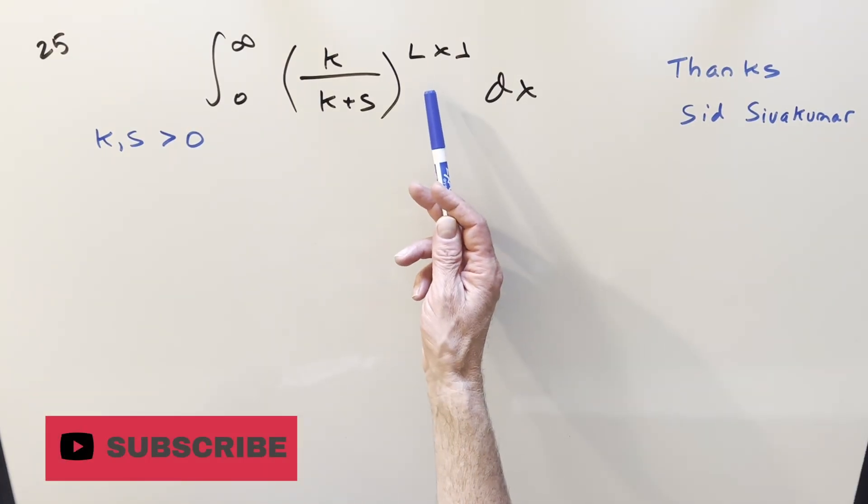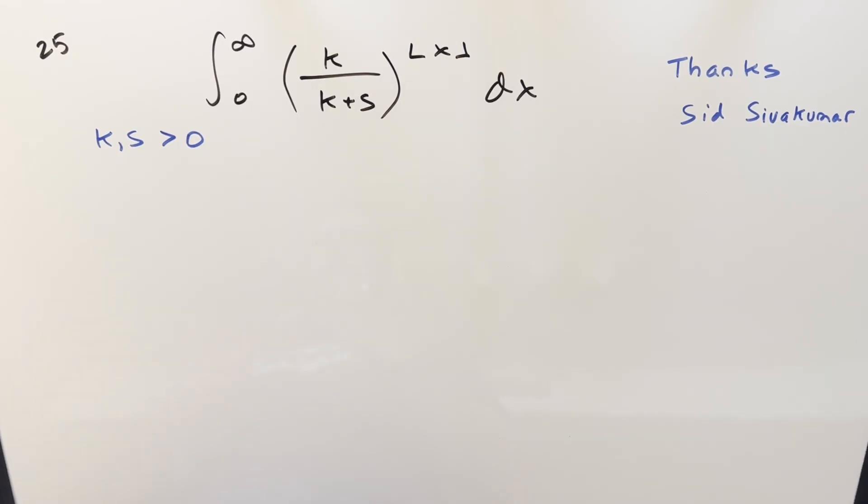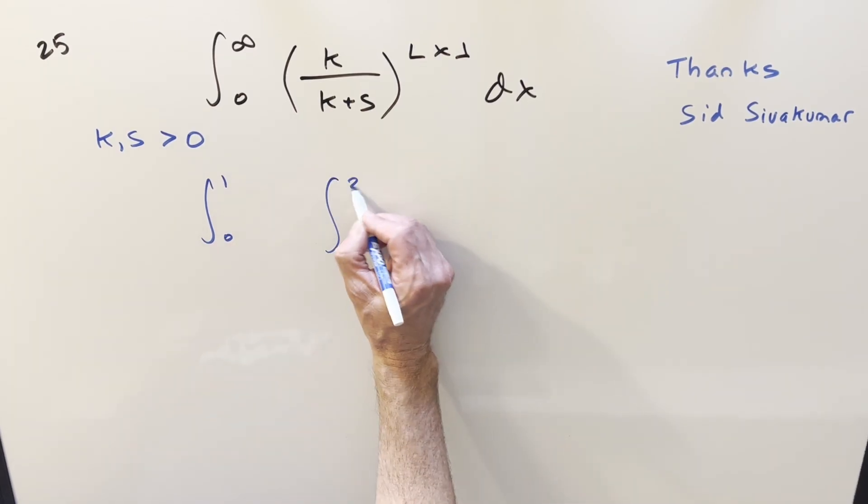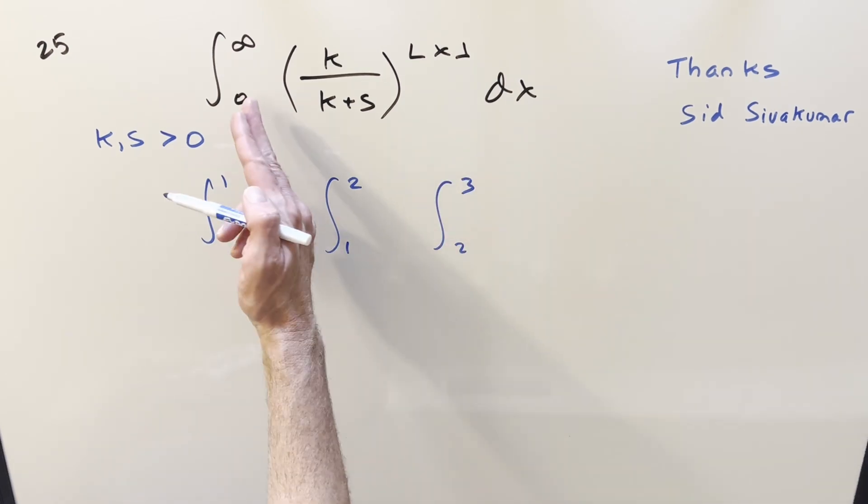I like the problems with the floor function because this is going to simplify pretty nicely. I think whenever we have just a single x inside of the floor, the way to go is to break it up so the bounds are integers. Like we could do 0 to 1, and then we'll have an integral of 1 to 2, and then we'll have an integral 2 to 3. This is going to keep going all the way to infinity.